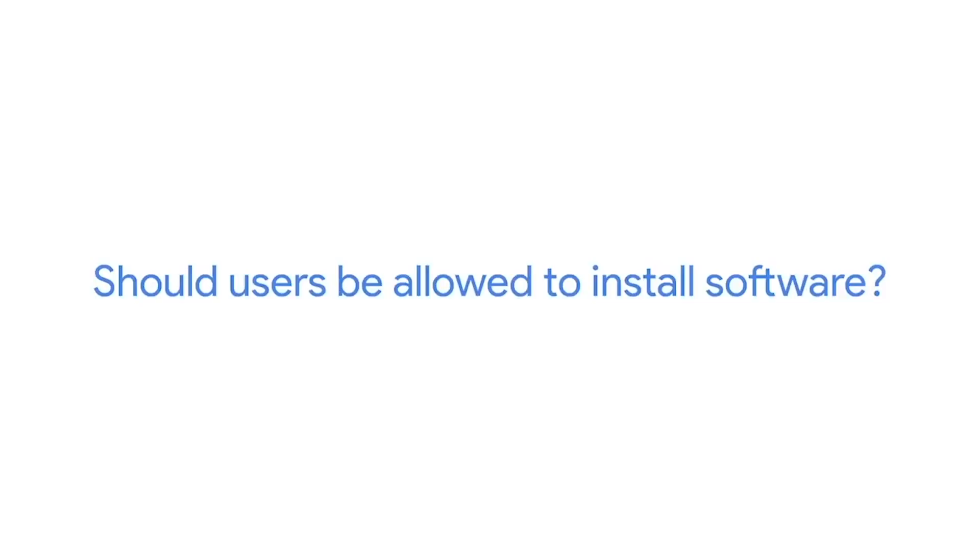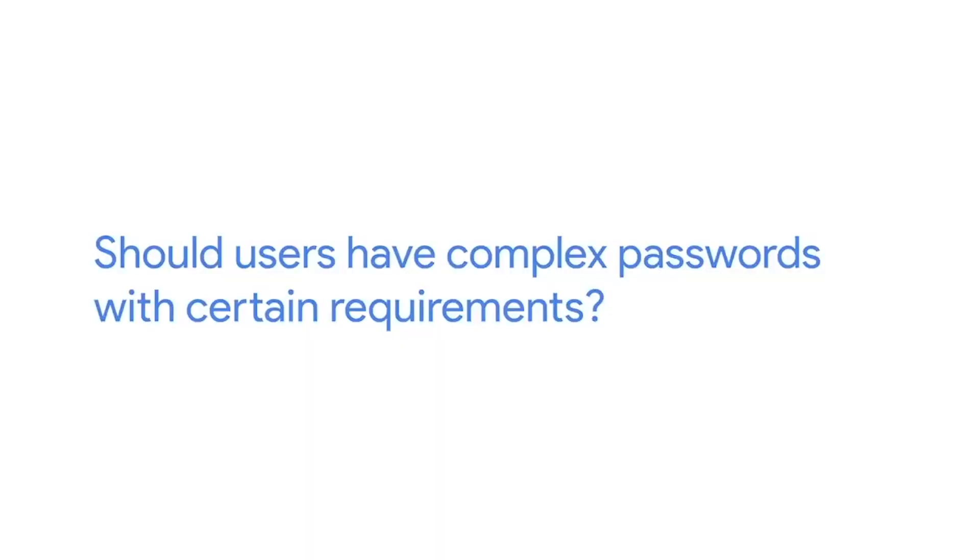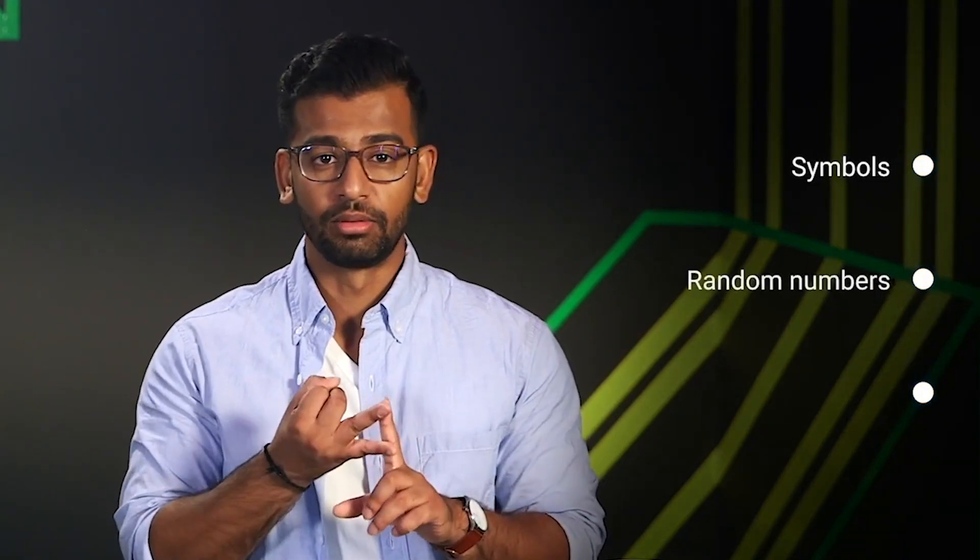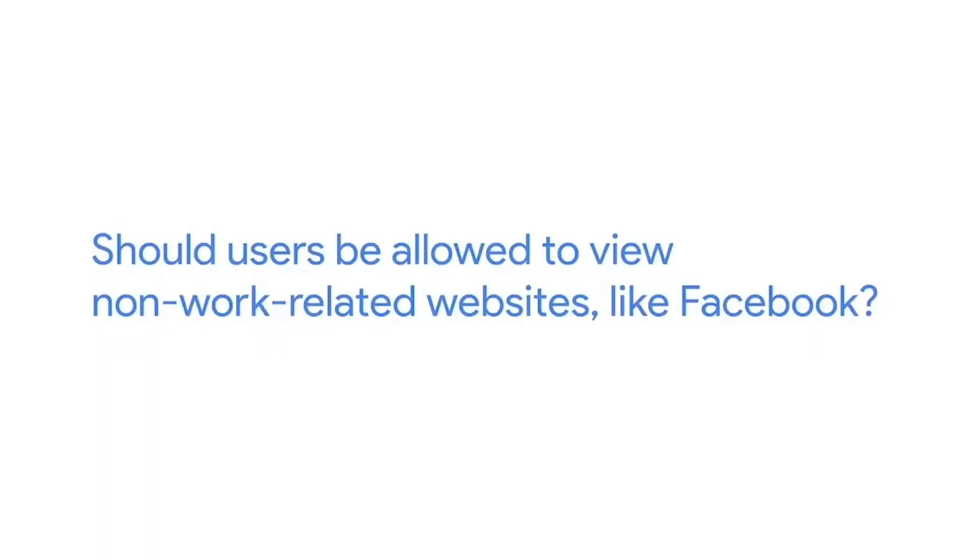There are a few common policy questions that come up in most IT settings. Should users be allowed to install software? Probably not — you could run the risk of a user accidentally installing malicious software. Should users have complex passwords with certain requirements? It's definitely a good rule of thumb to create a complex password with symbols, random numbers, and letters, with a minimum of eight characters to make it more difficult to crack. Should users be able to view non-work-related websites like Facebook? Some organizations prefer employees only use their work computer strictly for business, while many allow it so employees can promote goods on social media or stay up to date on current events.